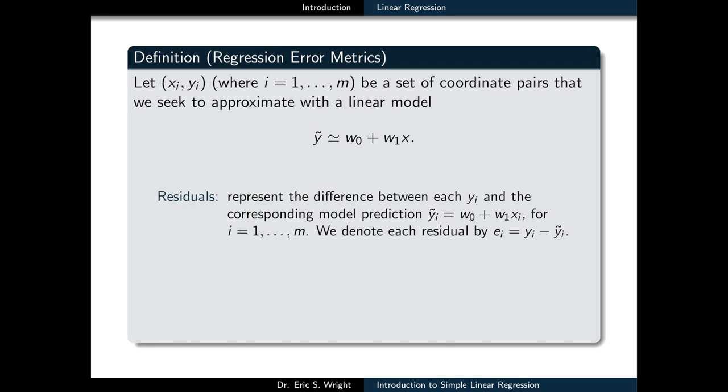The residuals of our model represent the difference between each Y coordinate in our data set and the corresponding model prediction that's made from the corresponding X coordinate in the data set. We denote each residual by the letter E sub i. The total sum of squares is denoted by SS subtotal and it's computed by forming the sum of the squares of the differences between each Y coordinate in the data set and the mean of all of the Y coordinates in the data set.